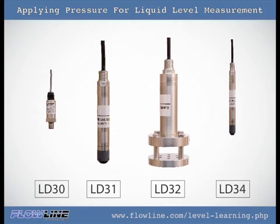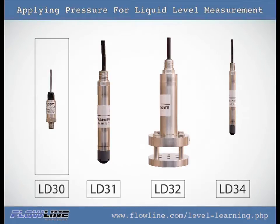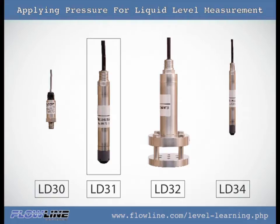Flowline offers four pressure transmitters covering a large variety of applications. The LD30 external pressure level transmitter is suited for clean liquid or gas media, including cutting oil and air. The LD31 submersible pressure level transmitter is suited for lightweight oil, diluted chemicals, or clean water, including water wells and ponds.